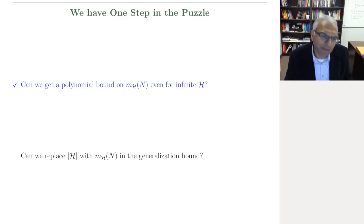So what remains is to show that we can indeed replace the size of the hypothesis set in that error bar, in the generalization error bar, by this effective number of hypotheses, which is the number of hypotheses that can be implemented on a data set of size n.